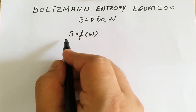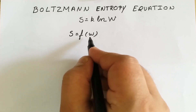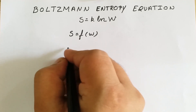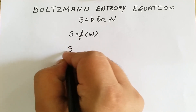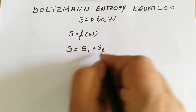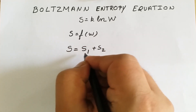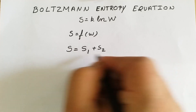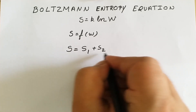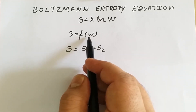We know that entropy is a state function — it depends on the initial and final state of the system — and thermodynamic probability is also a state function. So if S is the total entropy of the system, it may be written as S1 + S2, where S1 and S2 are the entropies of the individual states. The total entropy equals the sum of the entropies of both states.